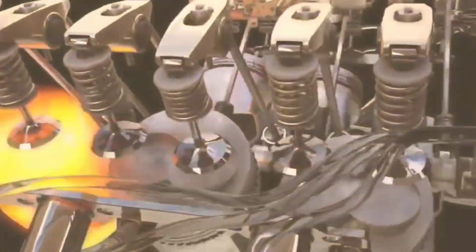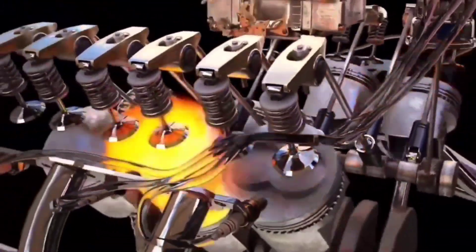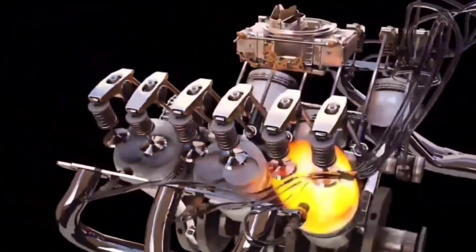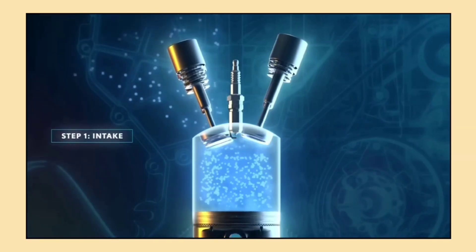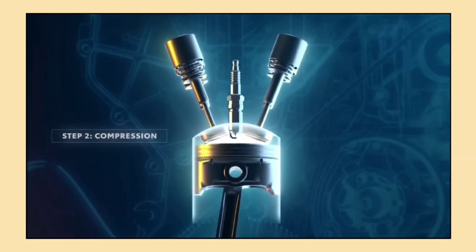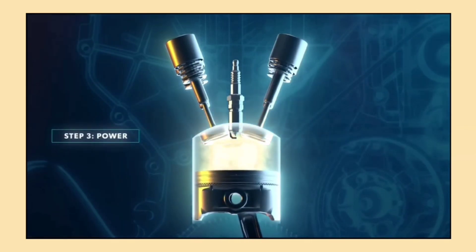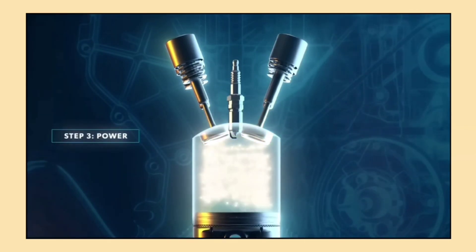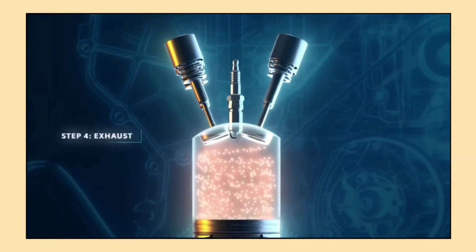Most car engines use a four-stroke cycle to run. It has four main steps: intake, compression, power, and exhaust. First, the engine takes in air and fuel. Then it compresses the mixture. Next, a spark ignites the fuel, creating power. Finally, it releases the exhaust gases. This cycle repeats every time the engine runs.